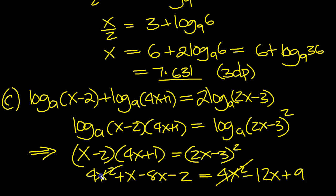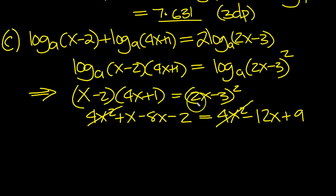So the 4x squareds cancel. Move this 12x over to be on this side, so we end up with 12 - 1 minus 8 is minus 7 - 12 minus 7 is 5x is equal to. Move the 2 over to be with the 9 to make 11.